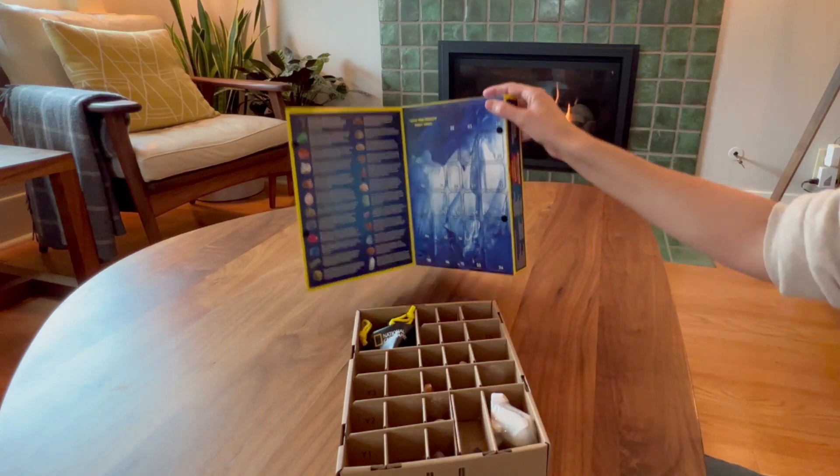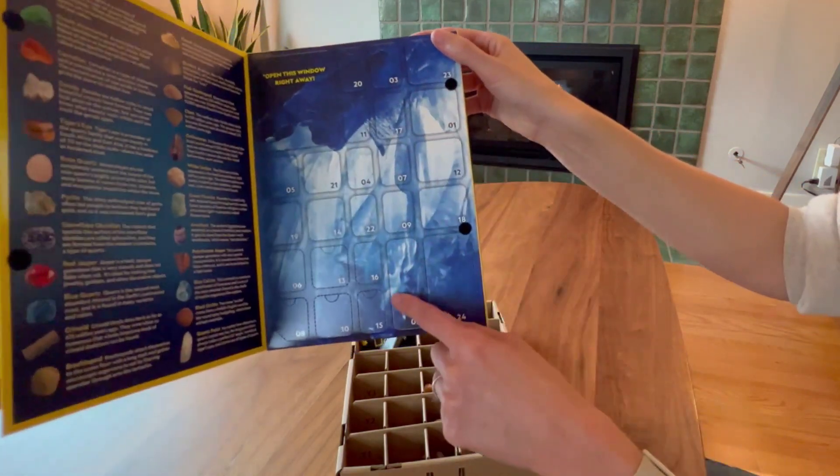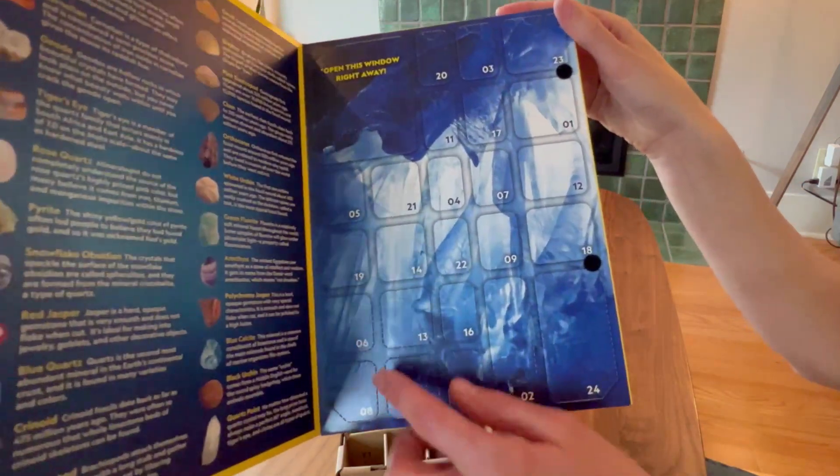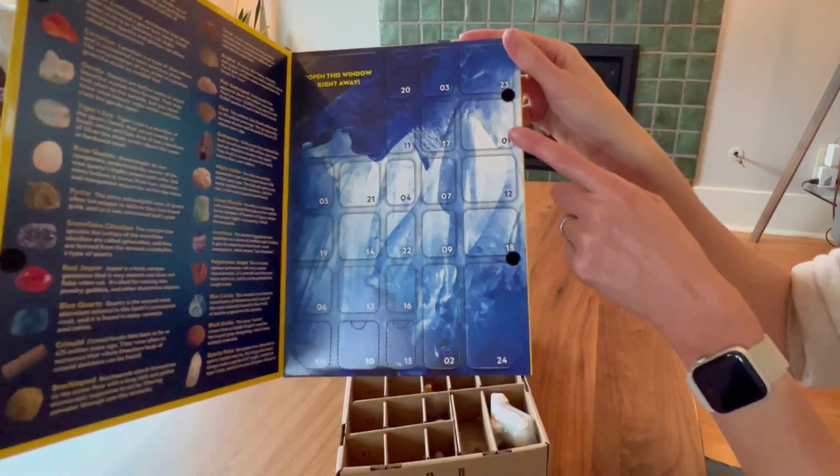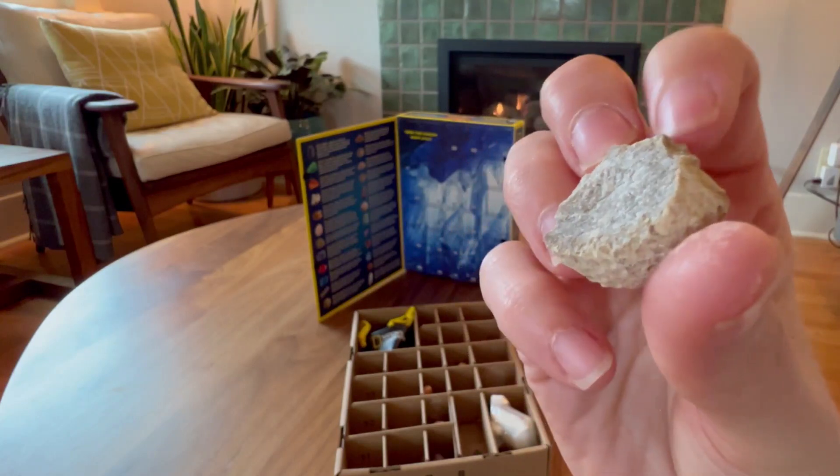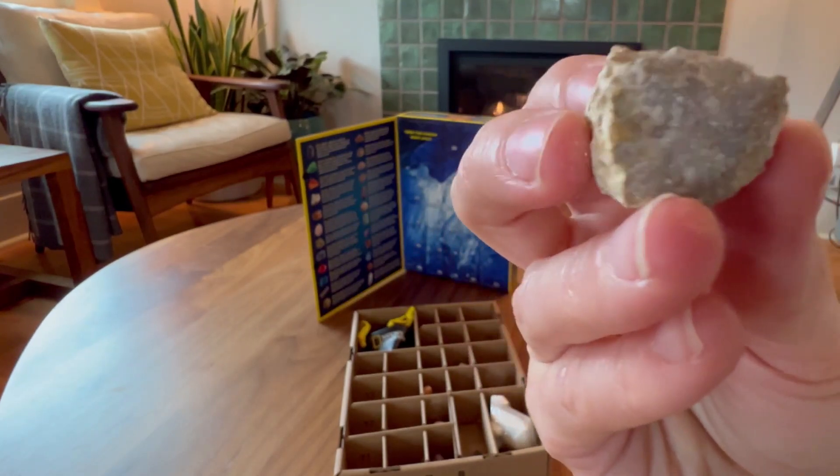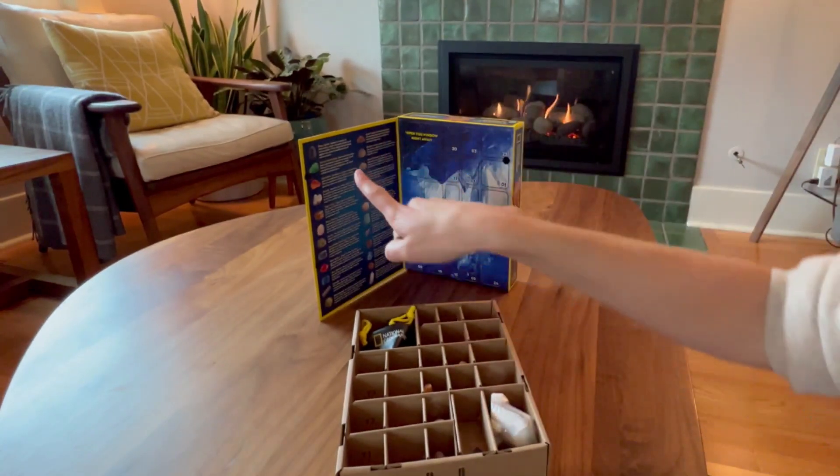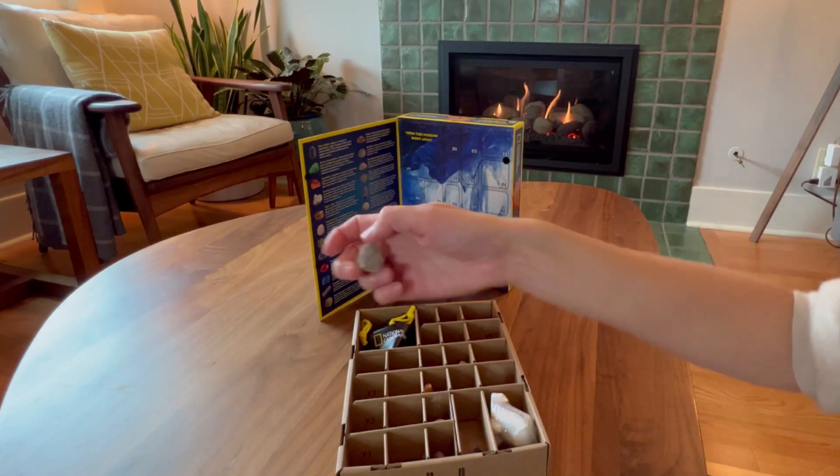Each day has a different stone, and the numbers are all over, which I always love with these advent calendars. You've got to figure out where day one is. What I love about this is each stone has its own complexity, little places to look into it, and of course all the information to figure out which stone you just got.